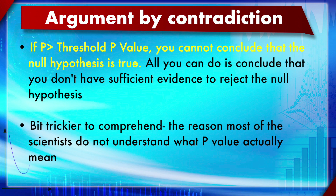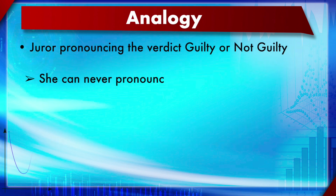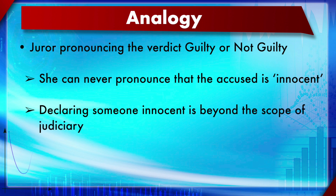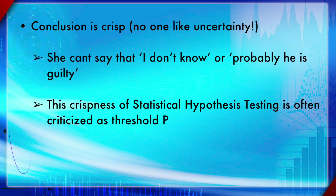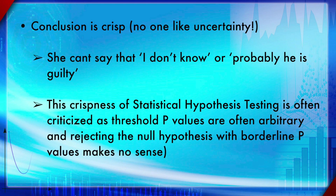An analogy: a juror pronounces a verdict of guilty or not guilty — they can never pronounce the accused innocent, which is beyond the scope of what a juror can say. Similarly, statistical hypothesis testing removes ambiguity and forces crisp decisions. This crispness is also a reason hypothesis testing is practiced in science — to remove ambiguity and make clear decisions.